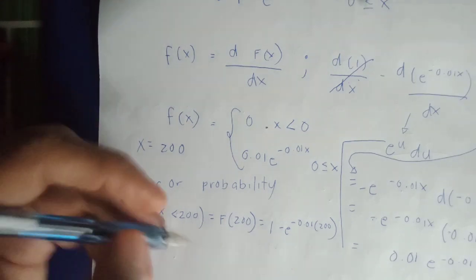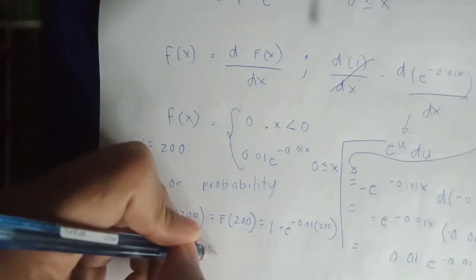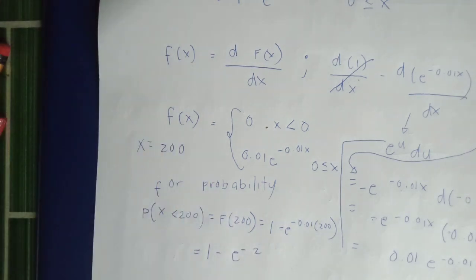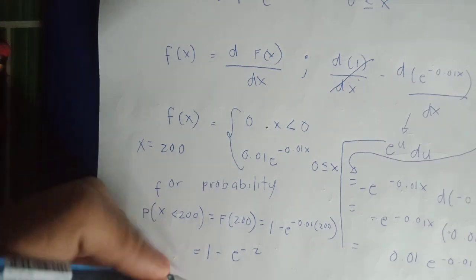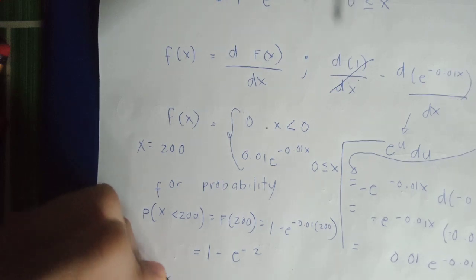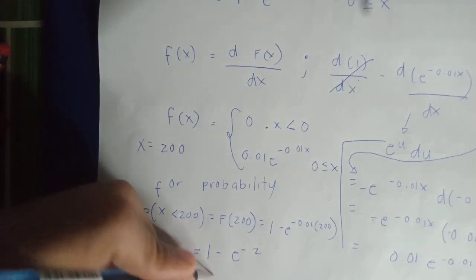Therefore, ang magiging sagot na natin is 1 minus e raised to negative 2. Ang makukuha natin yung probability for x less than 200 is 0.8647.